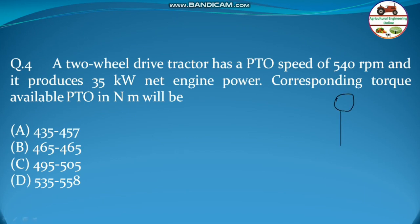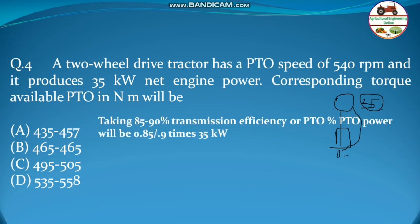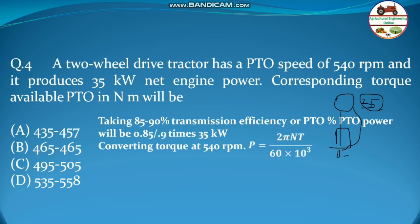The engine power passes through the gearbox and then reaches the PTO. Engine power is 35 kW and PTO speed is 540 rpm. Generally 85 to 90 percent of power is transmitted to the PTO when traction is not involved. So PTO power = 0.85 to 0.9 × 35 kW. Torque is calculated as T = (60 × 10³ × P) / (2π × N).